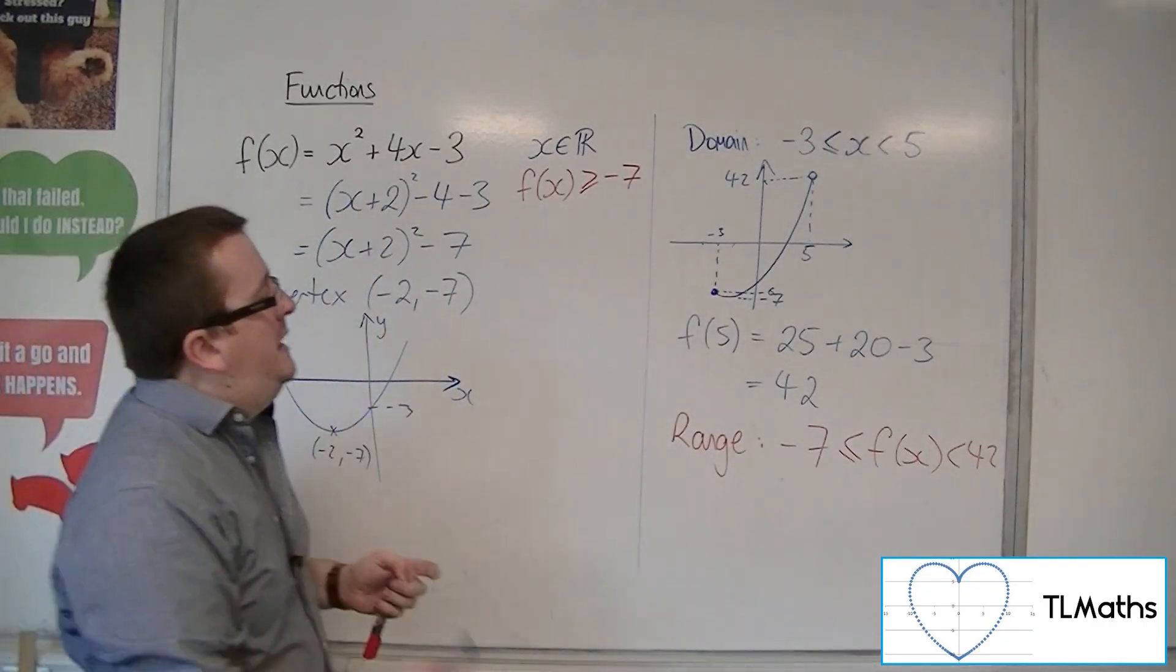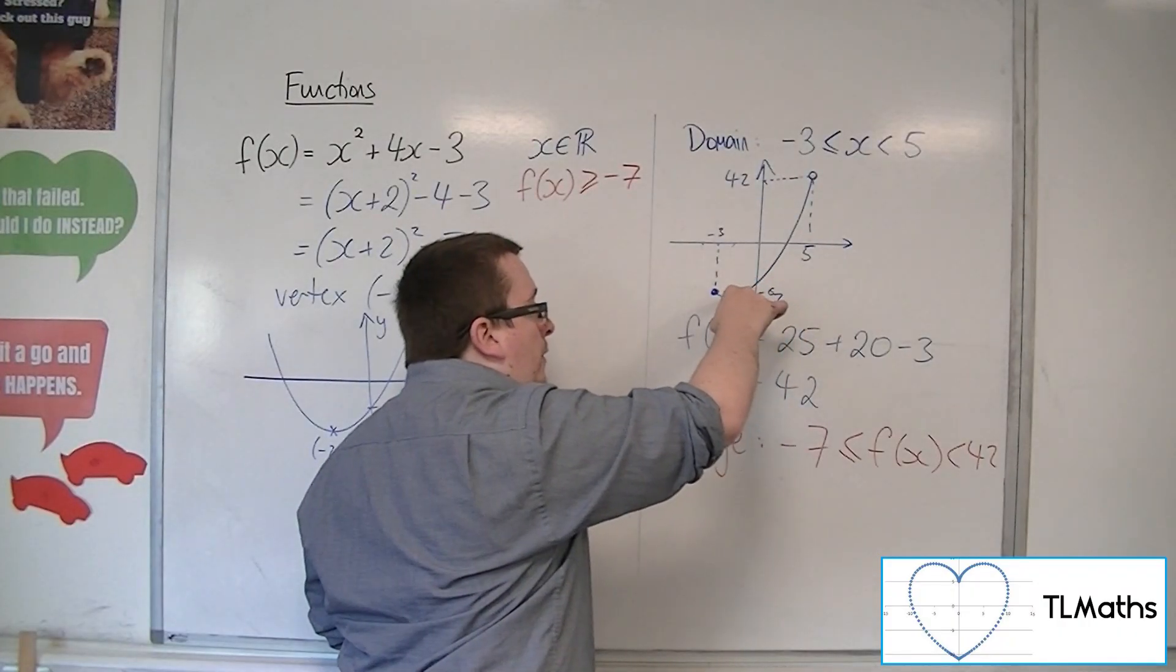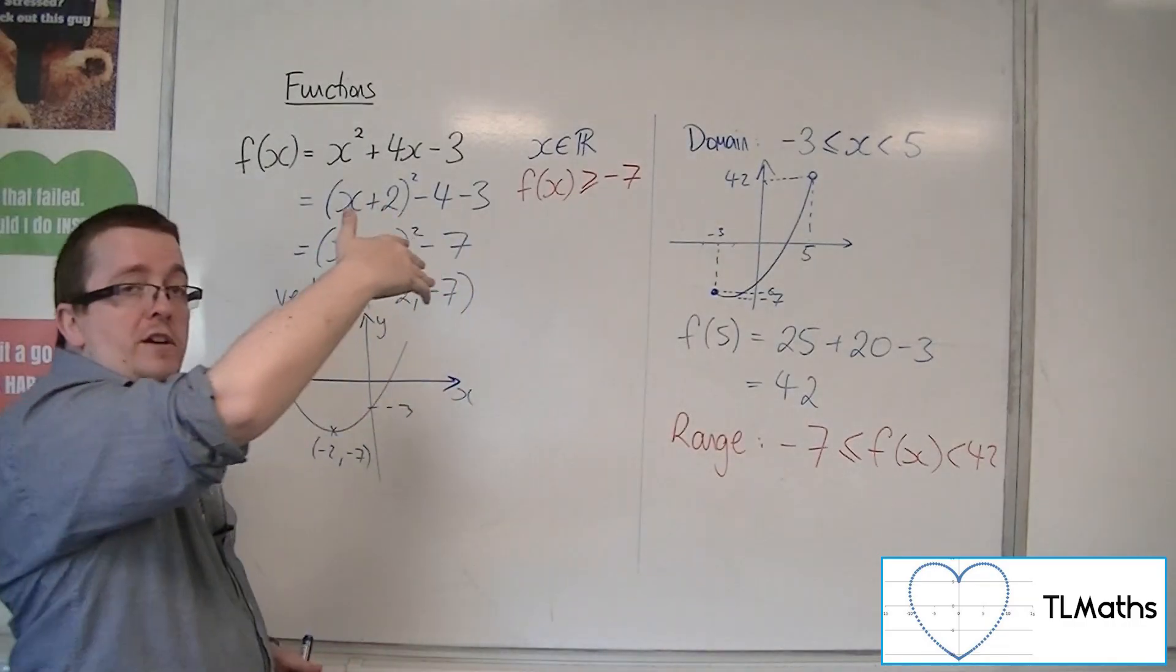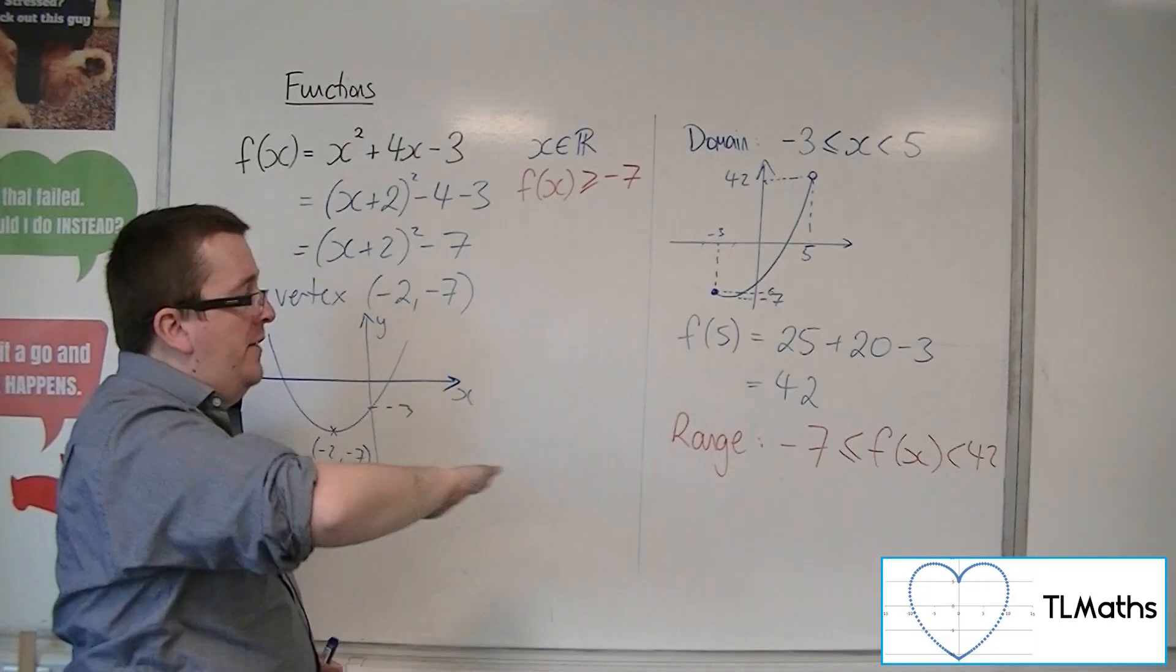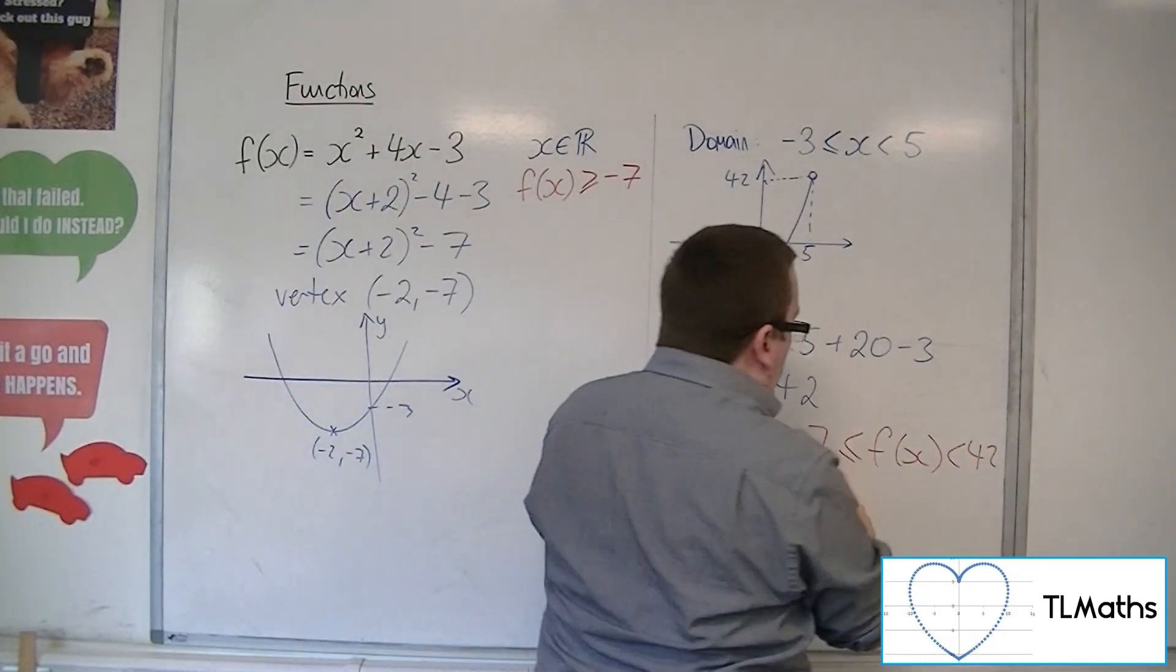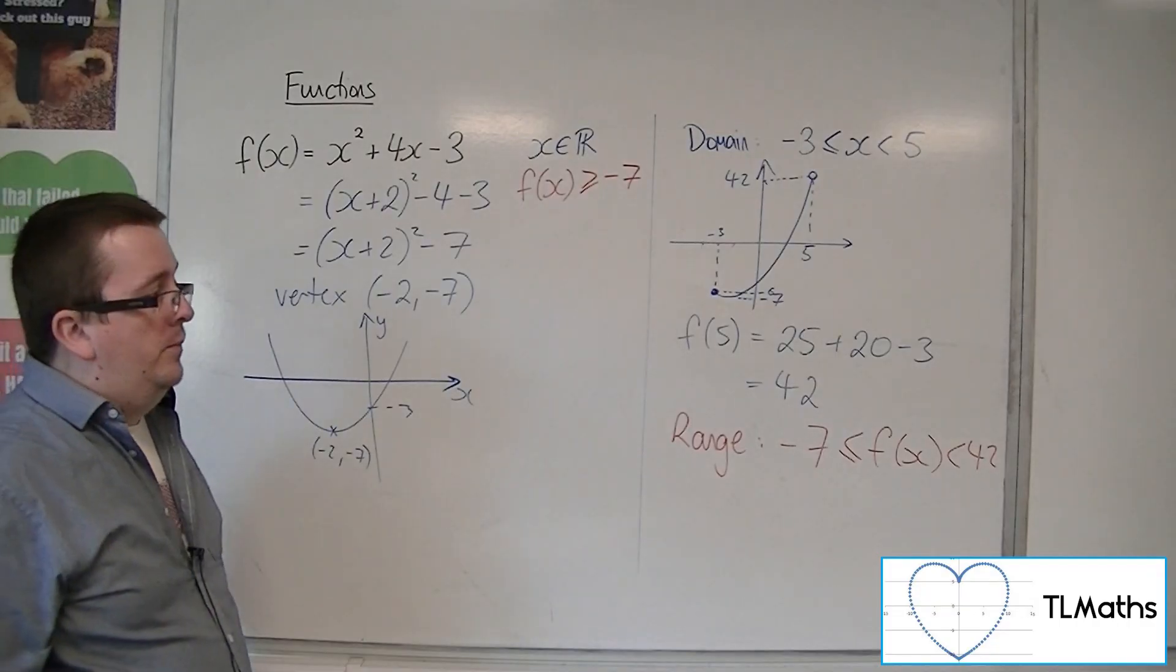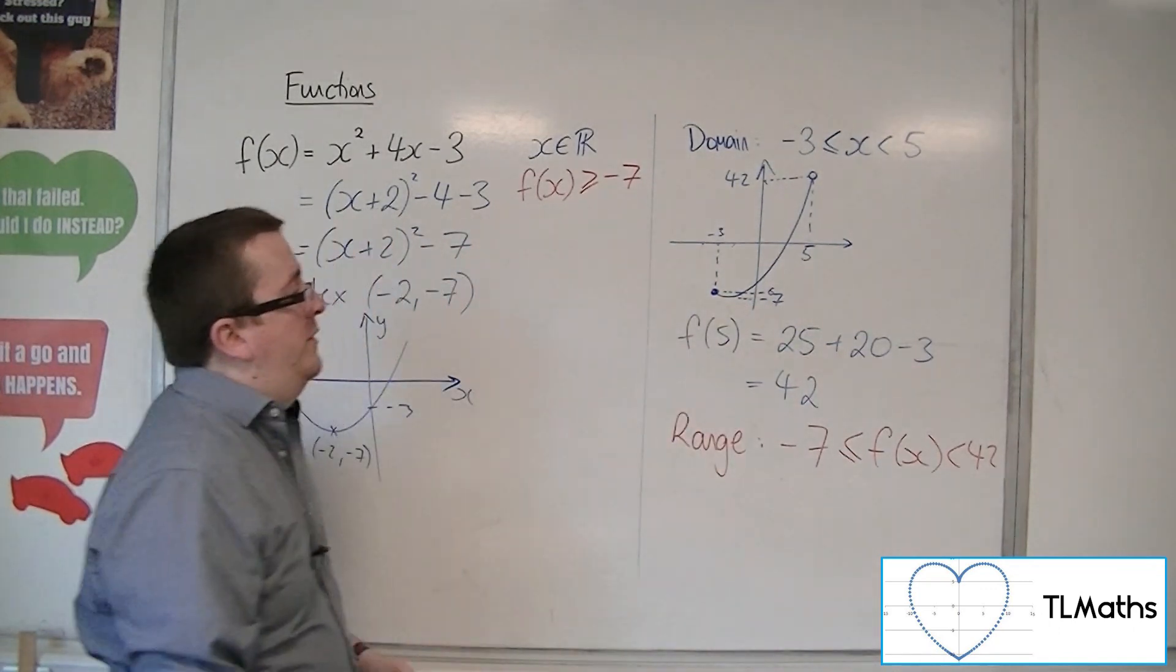However, because this graph goes down to -7 and then slightly up to -6, it still reaches -7, so the range would still be -7 to 42. It still exists at that point at -7.